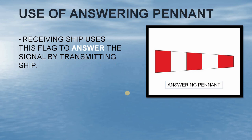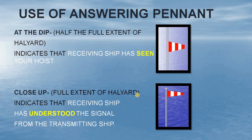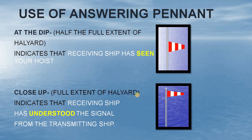Now we have the use of the answering pennant. The receiving ship uses this flag to answer a signal from the transmitting ship. It can also be used as a decimal point. There are two ways the answering pennant can be hoisted. It can be hoisted at the dip, which is the half extent of the halyard — the ropes used to hoist the flags. When hoisted at the dip, this indicates that the receiving ship has seen your hoist. The answering pennant is then hoisted at the full extent of the halyard, which is called close up, indicating the receiving ship has understood the signal.